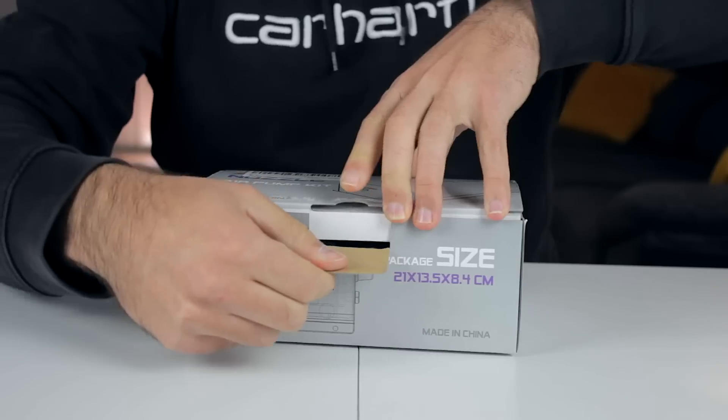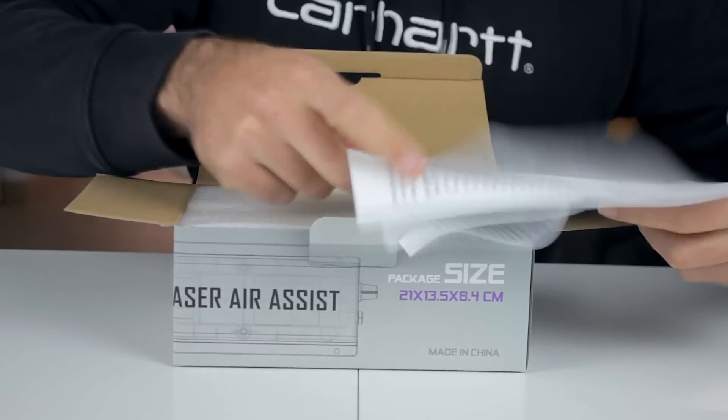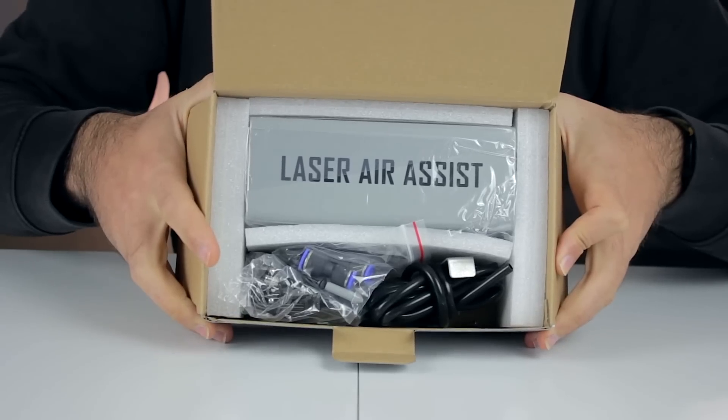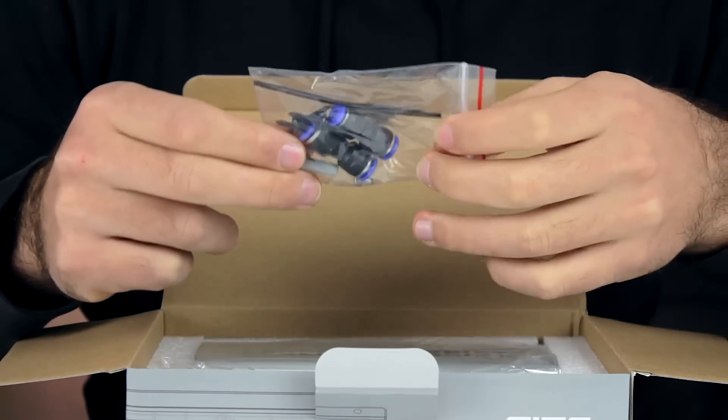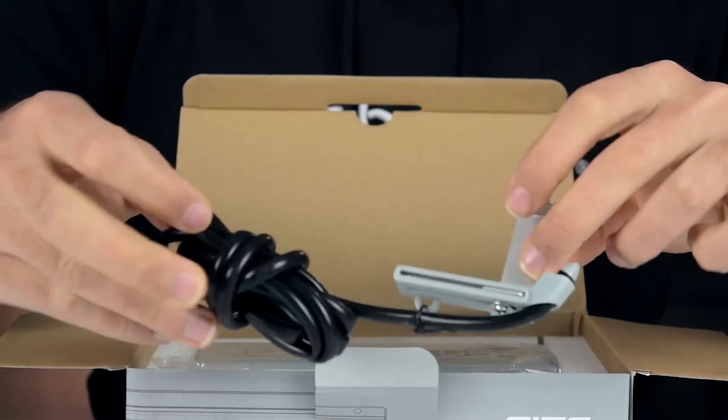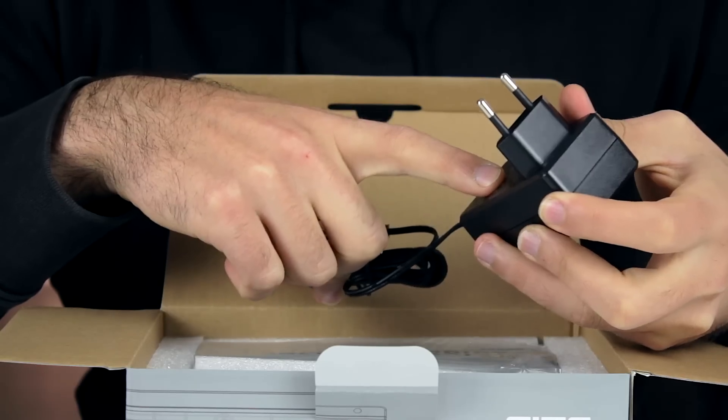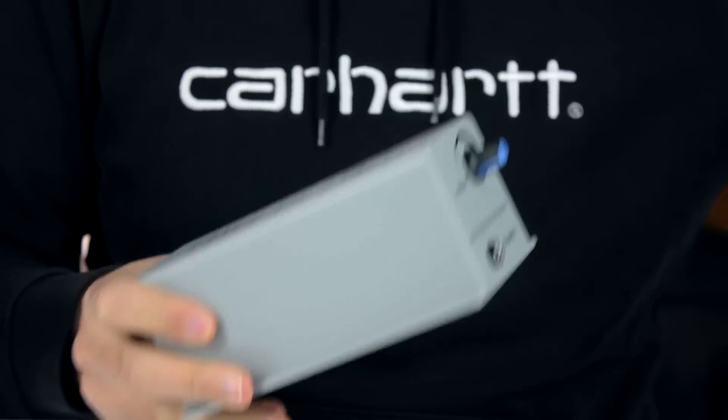I'm actually going to start with the smaller package. First we find some instructions, and directly underneath we have the rest of the components. Starting with a set of connectors and components, an air pipe with a nozzle attachment, the power supply that outputs 12V and 24W, and finally the air pump itself.